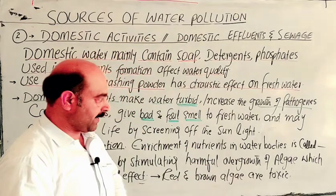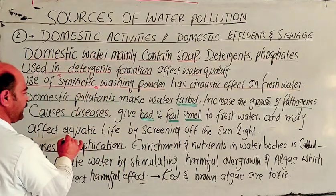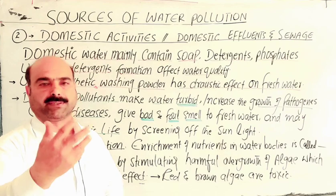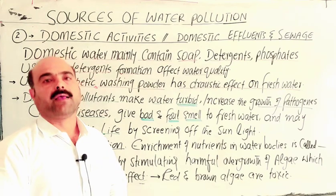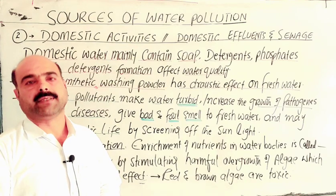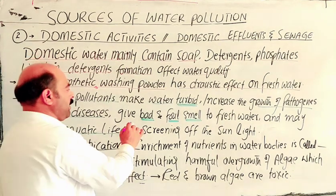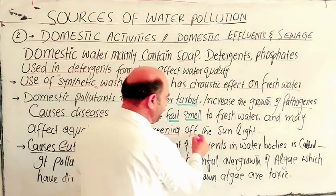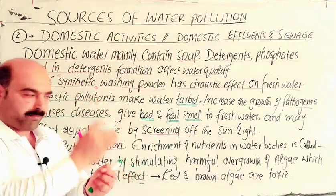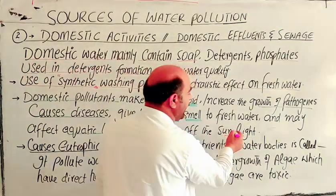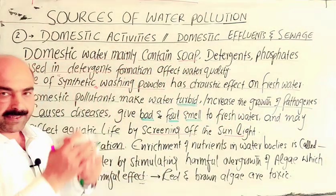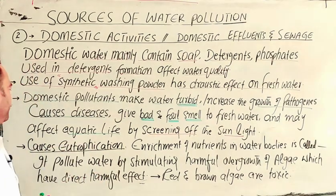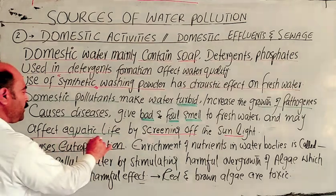Domestic pollutants affect the fresh water smell and may affect aquatic life — fish, crustaceans, and small organisms. They cause poison, diseases, and death. On the other hand, aquatic life is harmed by screening of sunlight, as pollutants block sunlight from reaching water.